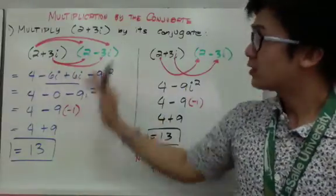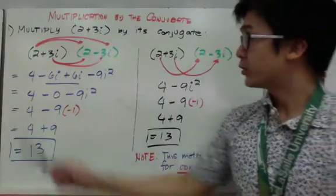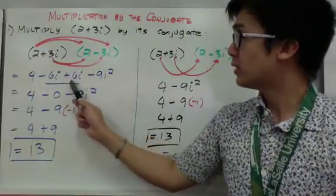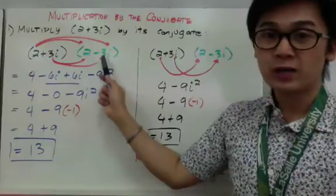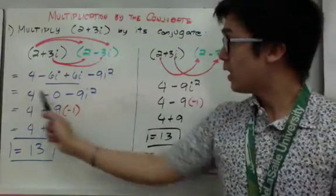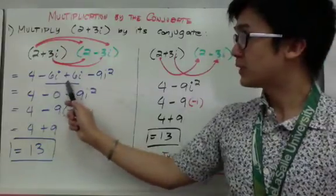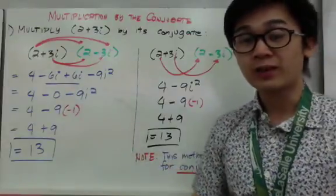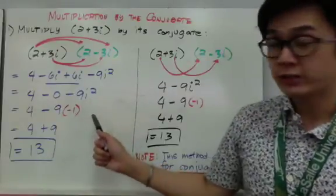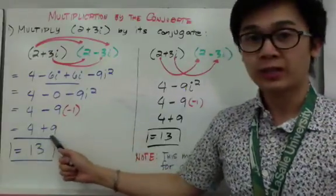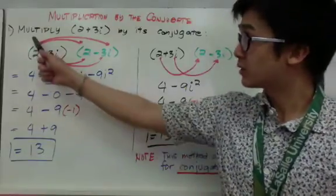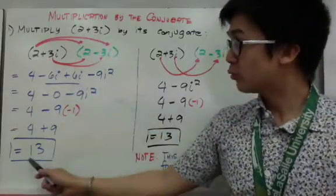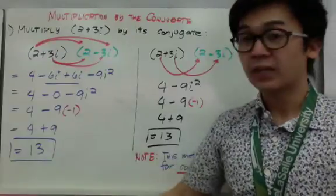The complex number looks like a binomial, so we can use the FOIL method. Two times two gives four; two times negative three i is negative six i; three i times two is positive six i; and three i times negative three i is negative nine i squared. Combining like terms, negative six i plus six i is zero, and negative nine i squared simplifies — since i squared equals negative one — to positive nine. So four plus nine gives us 13, a real number with no imaginary part.